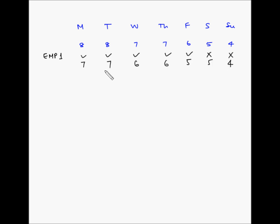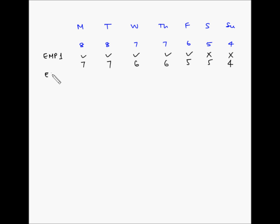Now let's again find the two consecutive days with the lowest net requirements. Calculating: 7+7=14, 7+6=13, 6+6=12, 6+5=11, 5+5=10, 5+4=9, and 4+7=11. Saturday and Sunday still have the lowest net requirements with a sum of 9, so for employee 2 we will give Saturday and Sunday off.